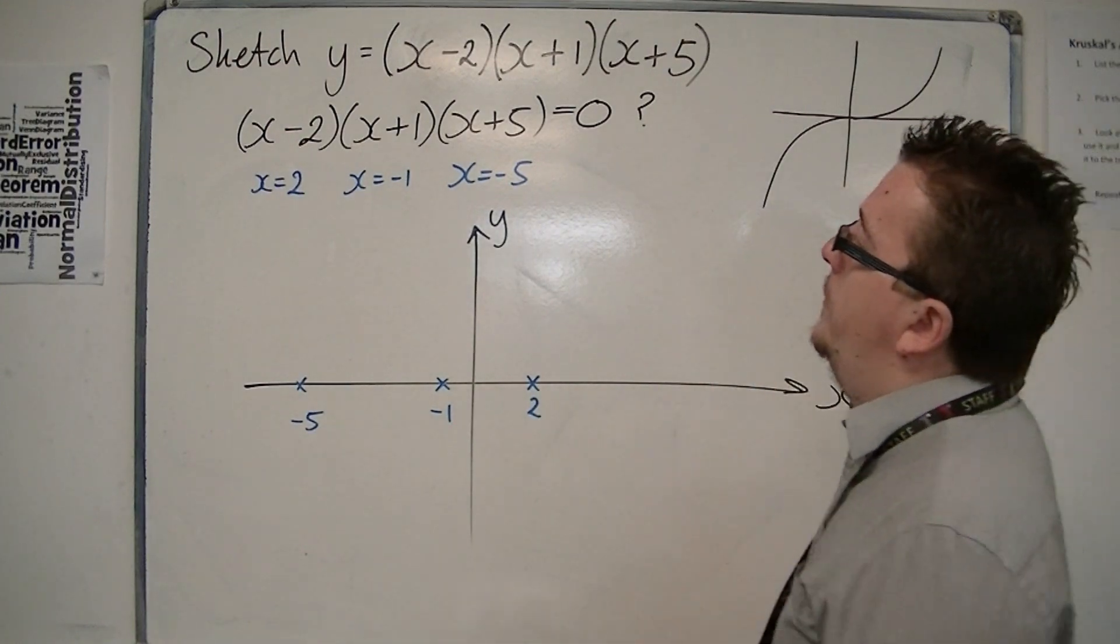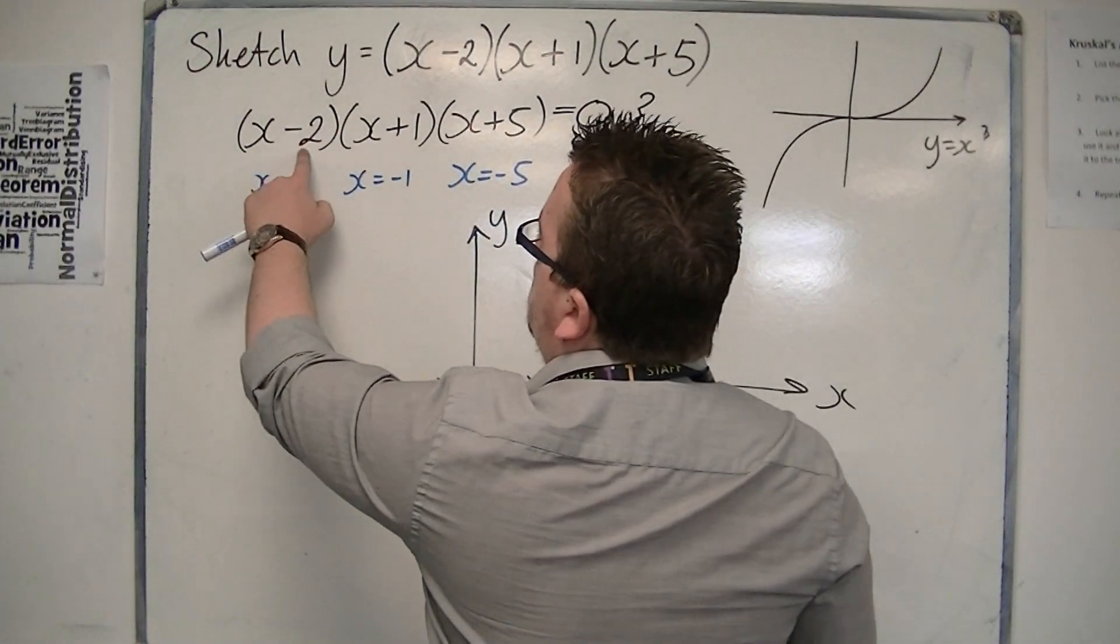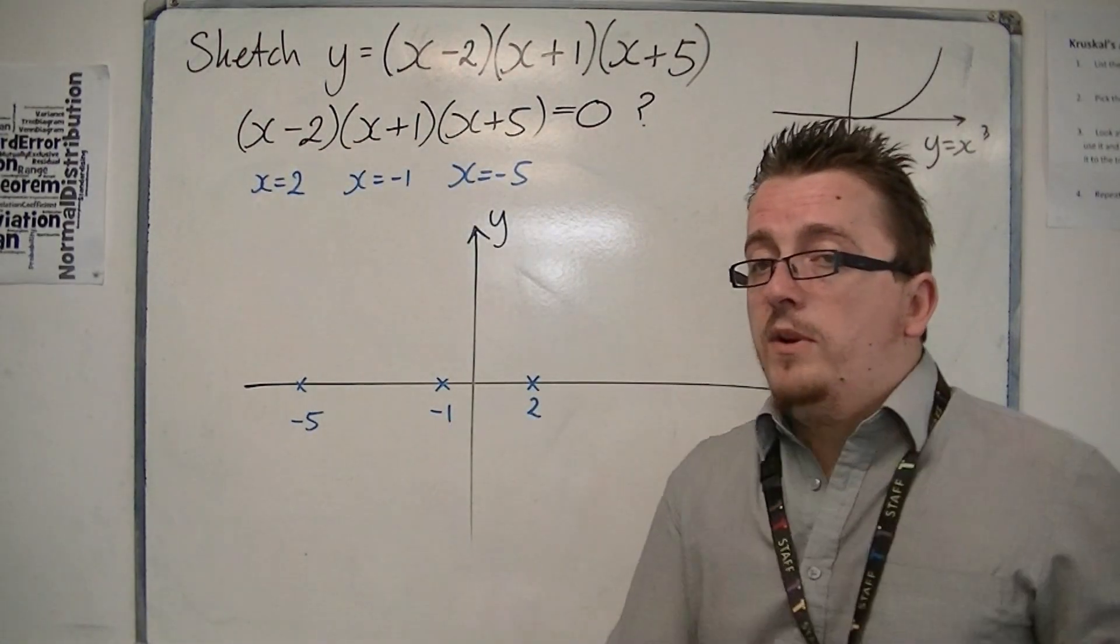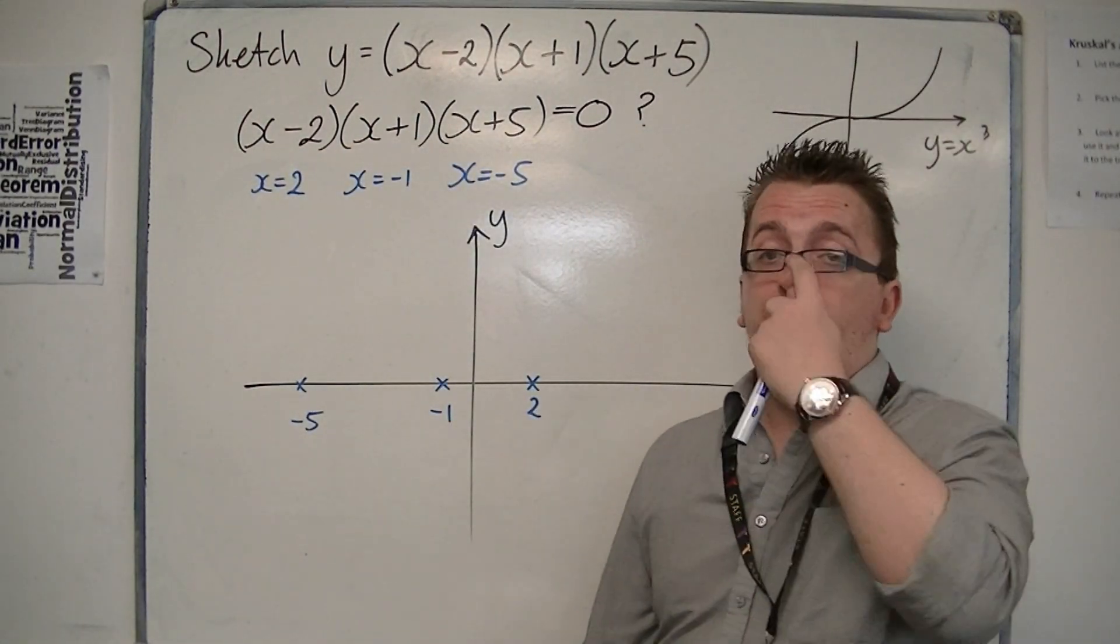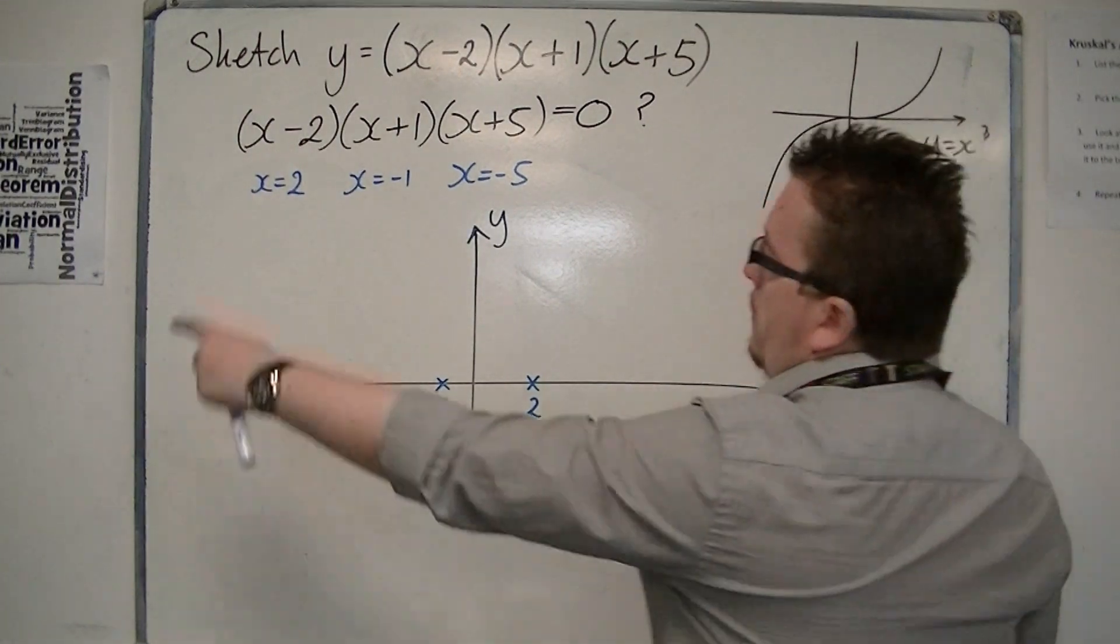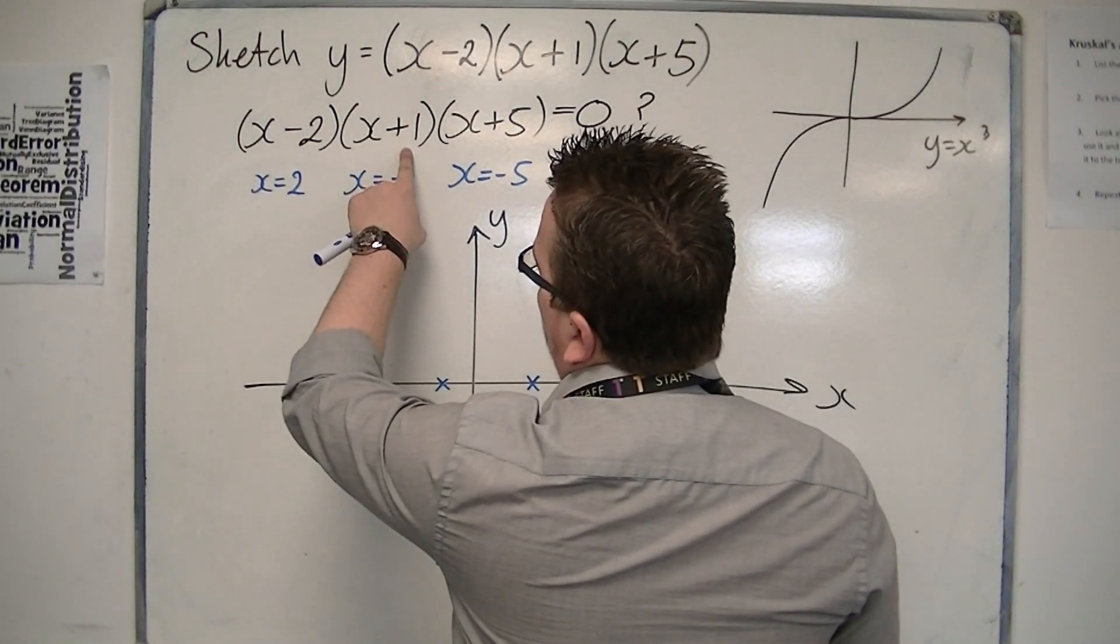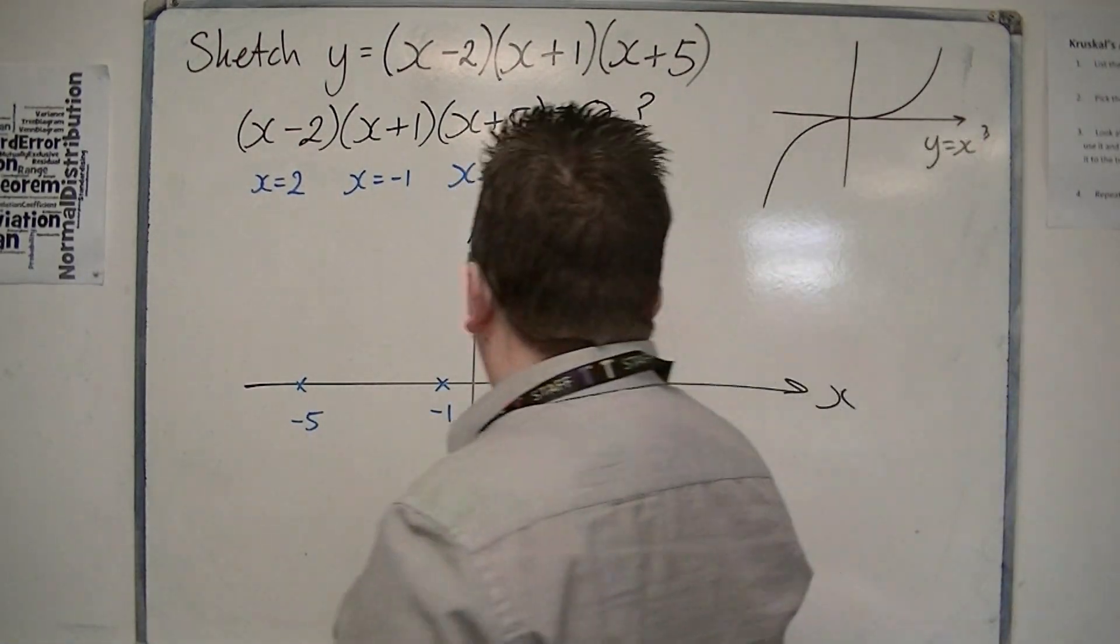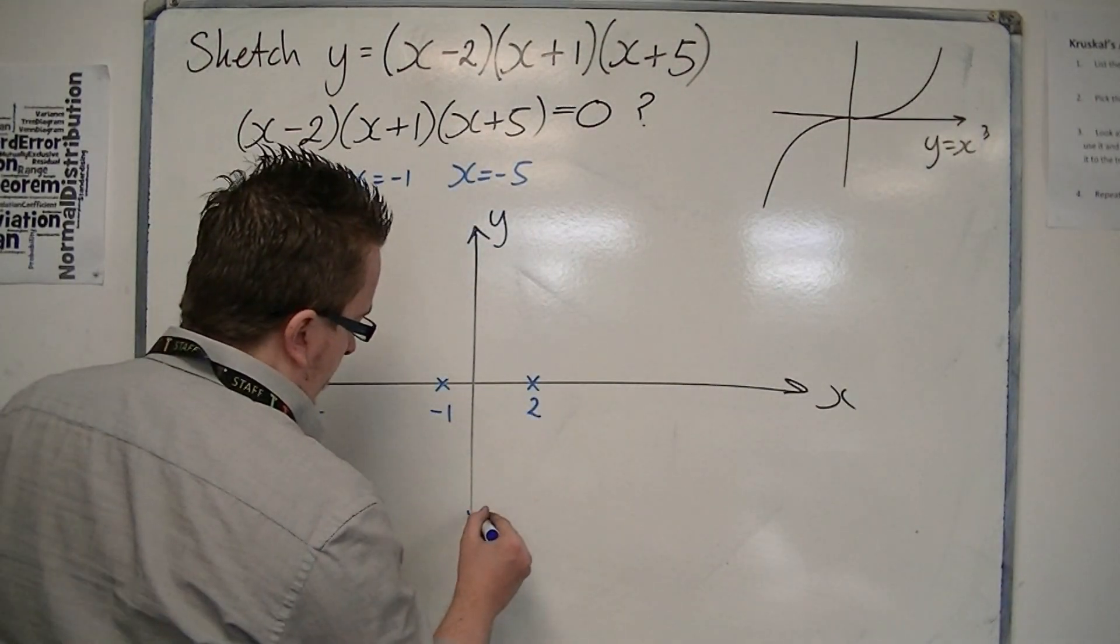We can tell by doing minus two times one times five, because that would give us the constant term when we multiplied out the brackets. So minus two times one is minus two, times five is minus ten. So it crosses the y-axis at minus ten.